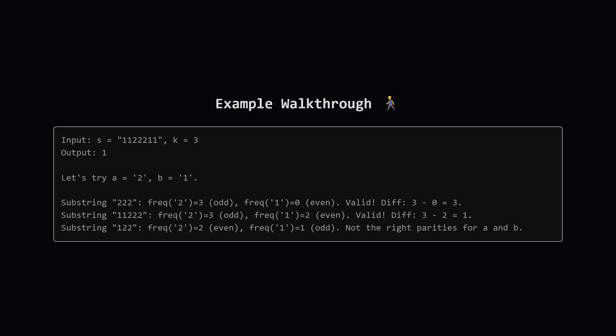Now what about 11222? The count of 2 is 3, that's odd. The count of 1 is 2, that's even. This also works. The score here is 3 minus 2, which is 1. The final answer for this example is 1, and we just found a substring that proves it. Our goal is to find this best possible value systematically.